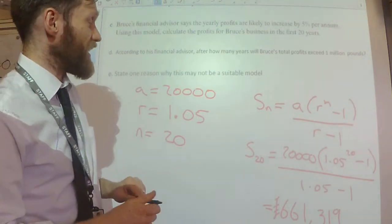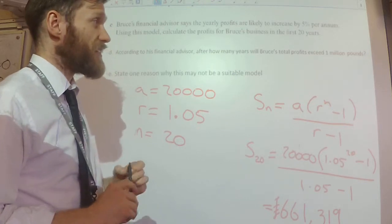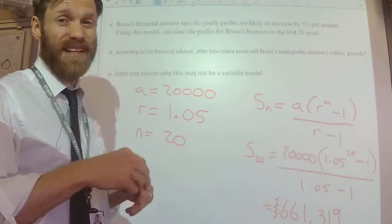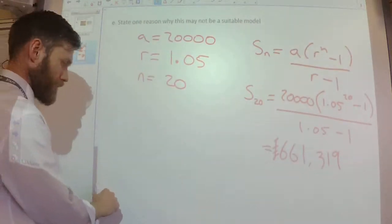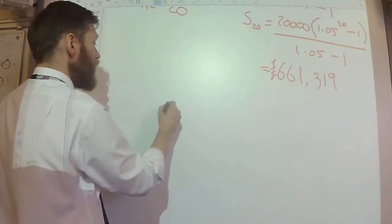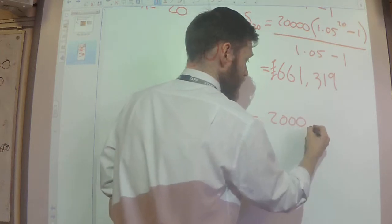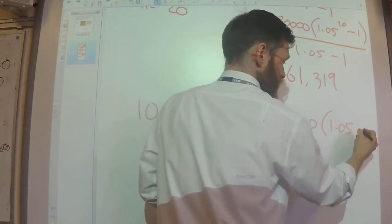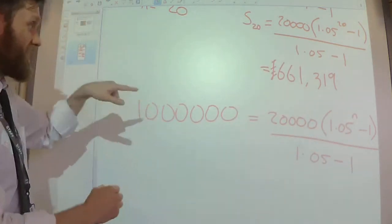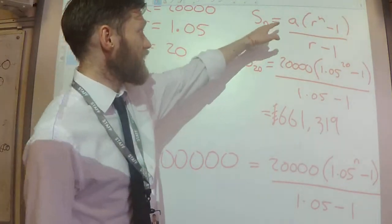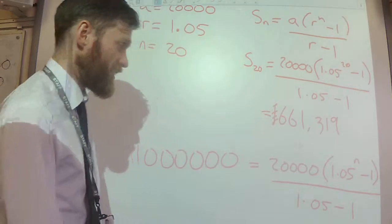Part D: according to his financial advisor — using the geometric sequence model — after how many years will Bruce's total profits exceed £1,000,000? So what value of n makes the sum bigger than £1,000,000? I'm going to use the sum formula where the sum equals £1,000,000: 1,000,000 = 20,000 × (1.05ⁿ − 1)/(1.05 − 1). This is the equation I'm going to solve to find n.